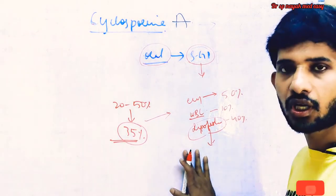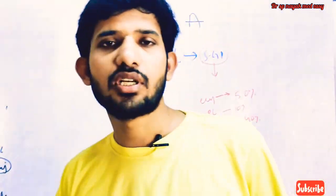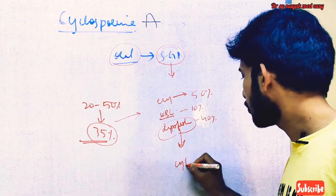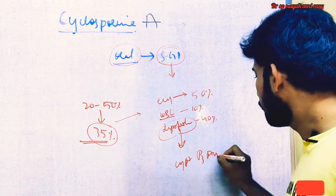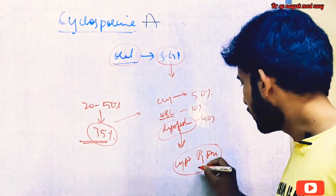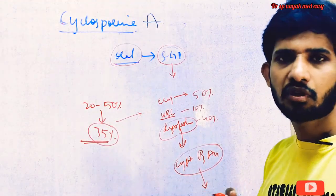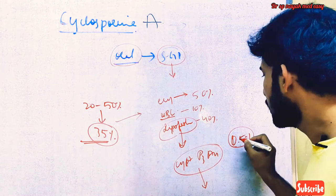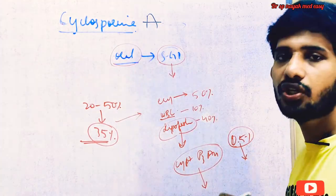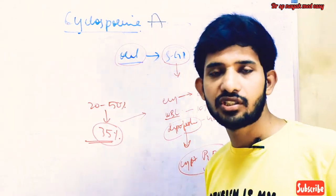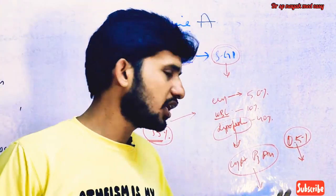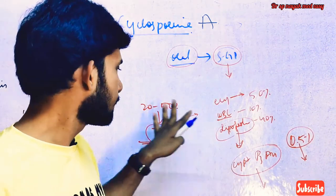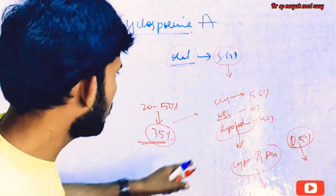About 99 percent of the compound is metabolized in the liver by cytochrome P3A4 enzymes. The metabolic products are excreted in urine. Only less than one percent — roughly around 0.5 percent — of cyclosporine is excreted unchanged in urine. So only less than one percent of the unchanged compound is excreted, and 99 percent of the compound is excreted as metabolic products in urine.